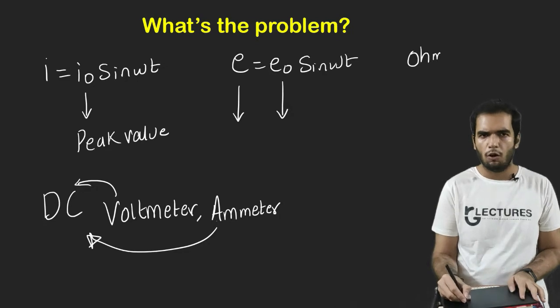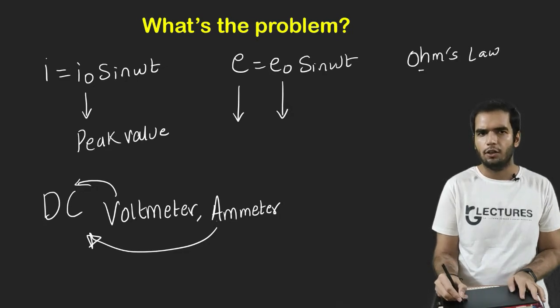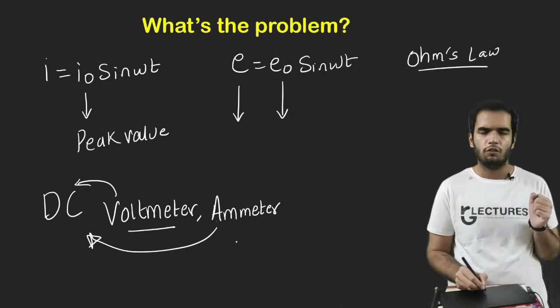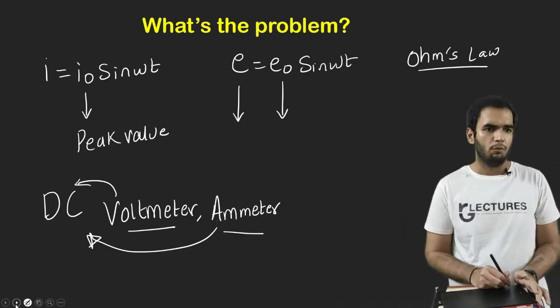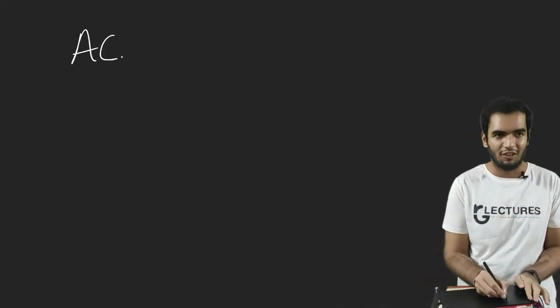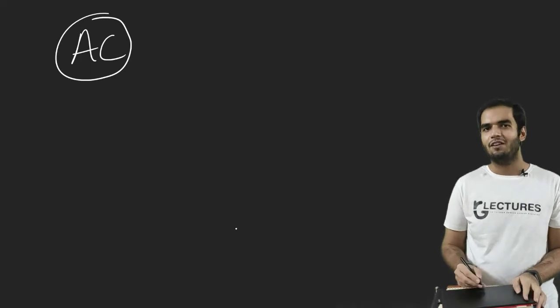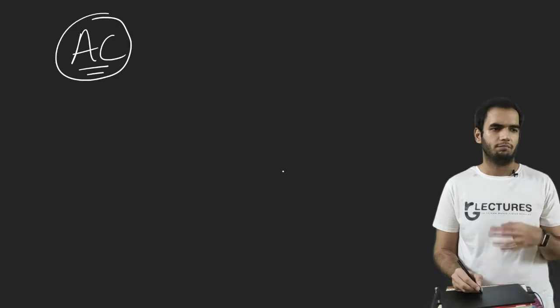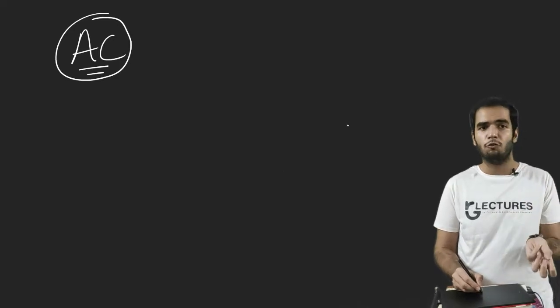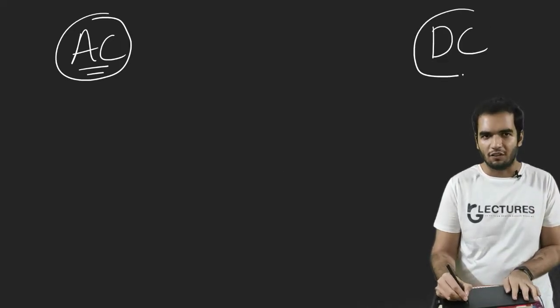Now, the problem is whatever we have dealt with till now, whether it is a voltmeter, an ammeter, whatever measuring devices we have come across work only for DC. Even in the Ohm's law apparatus which we saw in the last video, voltmeter was also DC voltmeter, ammeter was also DC ammeter.